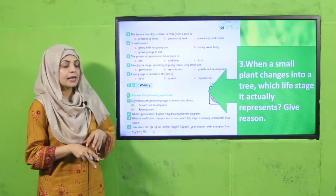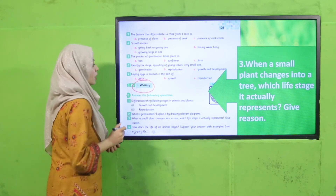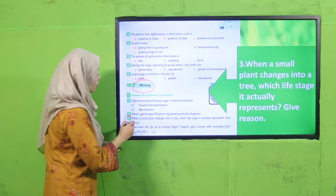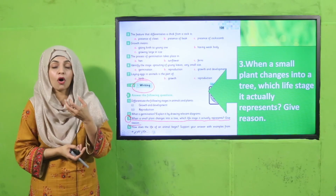Next is the writing practice from page 108. Do question number three in your notebooks: 'When a small plant changes into a tree, which life stage does it represent? Give a reason.' The answer is: this is called growth and development, because the plant has grown from a tiny plant into a bigger tree — it now has a bigger, stronger stem, more branches, and more leaves.